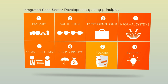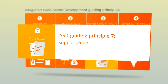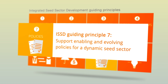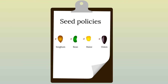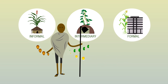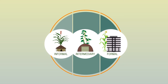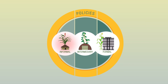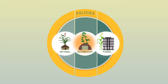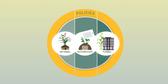ISSD Guiding Principle 7: Support enabling and evolving policies for a dynamic seed sector. ISSD advocates for enabling seed policies that are coherent with the realities of farmers who source their seed from multiple systems. Policies need to be able to accommodate changing circumstances in order to appreciate the dynamics of the agricultural sector. ISSD also supports policy implementation, which is often a key bottleneck.